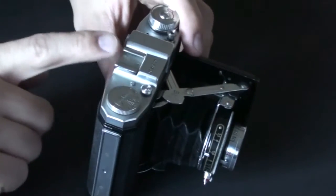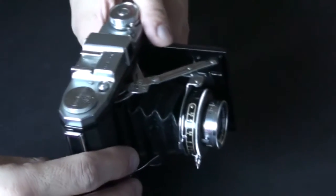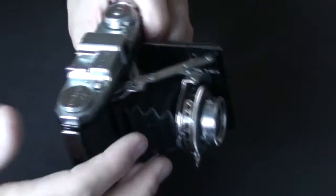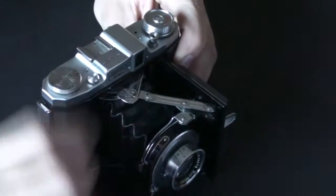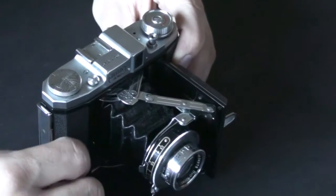There's a flash cold shoe port on top of the camera, on the top plate. So, that little guy could be related to this, although I'm not 100% sure.